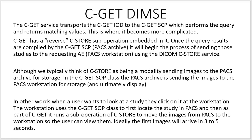In other words, when a user wants to look at a study, they click on it at the workstation. C-GET uses the C-GET SOP class to first locate the study in PACS, and then as part of C-GET it runs a sub-operation of C-STORE to move the images from PACS to the workstation so the user can view them. Ideally the first images will arrive in three to five seconds.